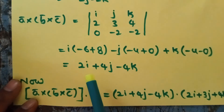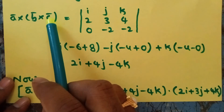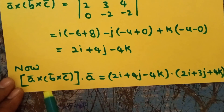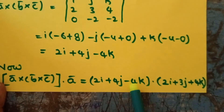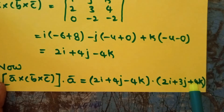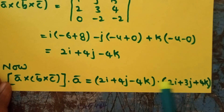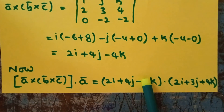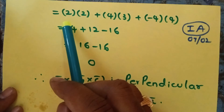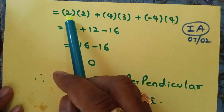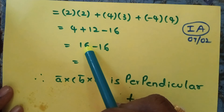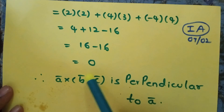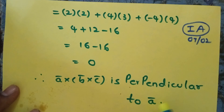Now we have to verify that A cross (B cross C) is perpendicular to A bar. For that, we find the dot product of A cross (B cross C) and A bar. A cross (B cross C) is 2i plus 4j minus 4k, dot A bar which is 2i plus 3j plus 4k. Multiplying i, j, k components: 2 times 2 is 4, 4 times 3 is 12, minus 4 times 4 is minus 16. So 4 plus 12 minus 16 equals 0. Since the dot product of two vectors is 0, we can say the two vectors are perpendicular to each other. Therefore A cross (B cross C) is perpendicular to A bar. Completed.